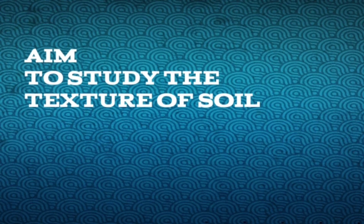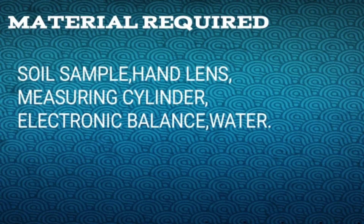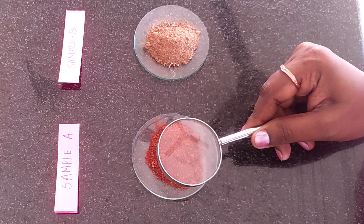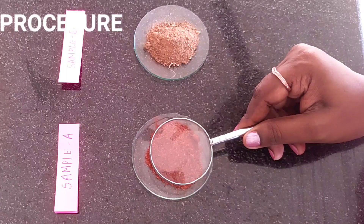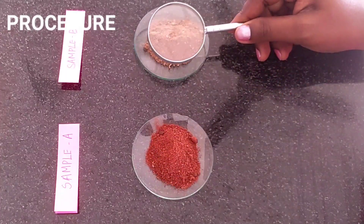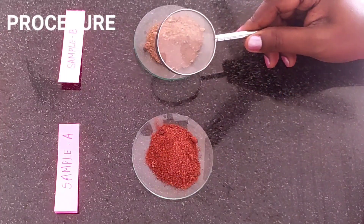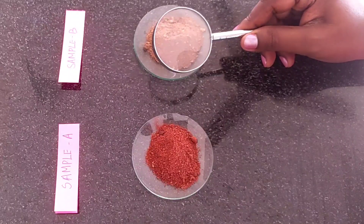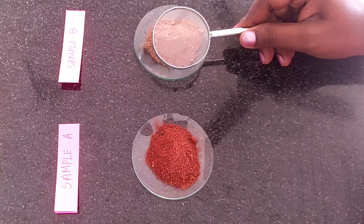The aim of the experiment is to study the texture of soil. Materials required: soil sample, hand lens, measuring cylinder, electronic balance, and water. Here I have taken two samples, A and B — one from the roadside and the other from the garden.